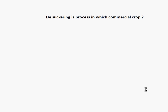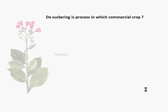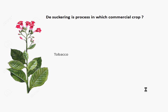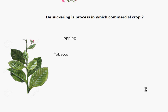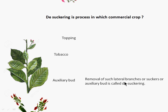The de-suckering is a process in which commercial crop? Your answer is tobacco. Actually, after the topping of tobacco there will be axillary bud formation and lateral branch formation. But in tobacco cultivation we are not interested to harvest the flower and seeds — we are totally interested towards leaf formation. That's why we remove such lateral branches and suckers. And this process is called de-suckering.